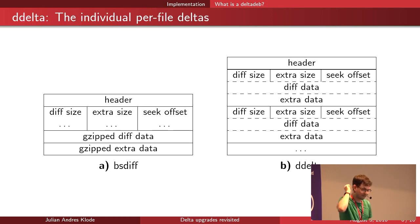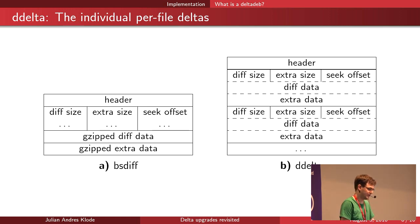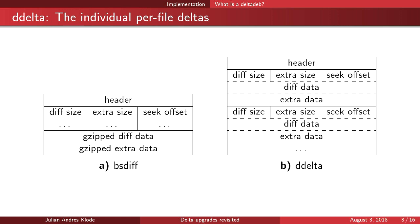Each file delta is represented using a bsdiff variant. On the left side you can see the normal bsdiff format, which contains a header followed by control blocks. The control blocks contain a number of bytes to read from a diff section at the end of the file, an extra section, and a seek offset. The extra section is data from the new file contained in the diff, and the diff data is gzipped.